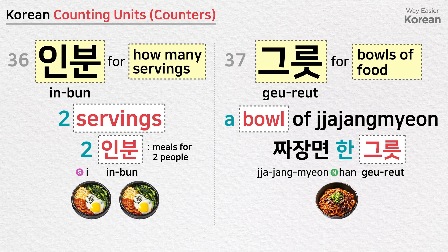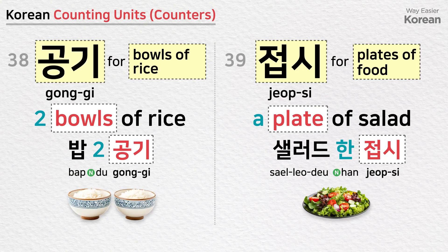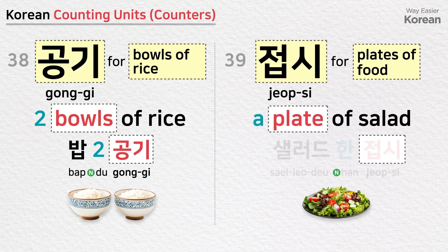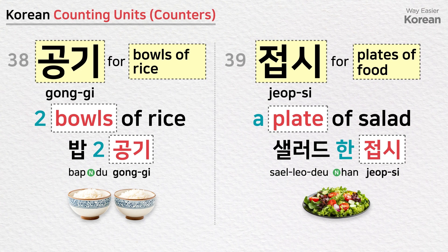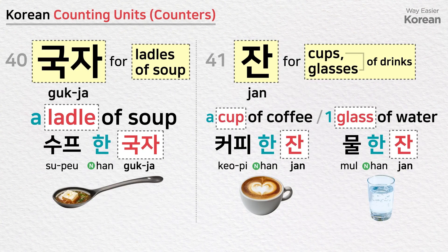그릇 is a counting unit for bowls of food: a bowl of 짜장면 — 짜장면 한 그릇. 공기 is a counting unit for bowls of rice: two bowls of rice — 밥 두 공기. 접시 is a counting unit for plates of food: a plate of salad — 샐러드 한 접시. 국자 is a counting unit for ladles of soup: a ladle of soup — 수프 한 국자.